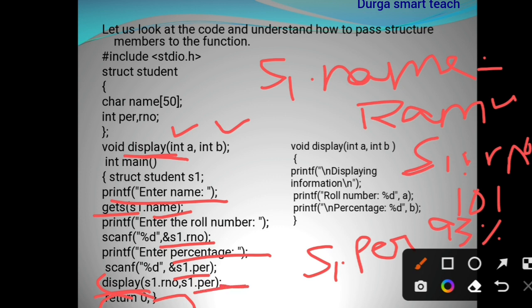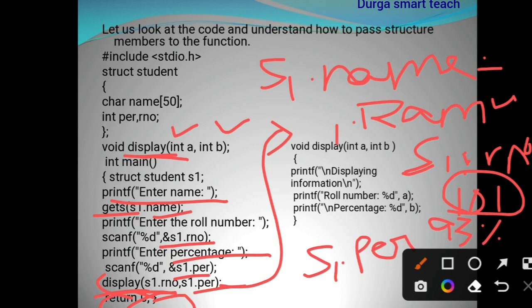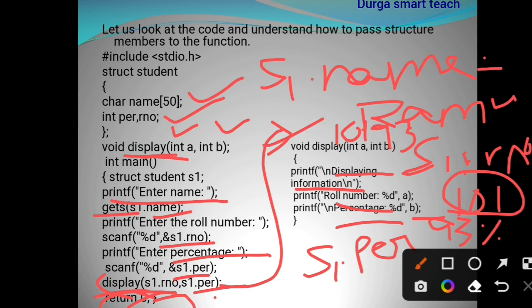Whenever you call the display function, the control passes to void display. The value s1.rnumber is 101, so 101 is stored in a. s1.percentage is 93, so 93 is stored in b. Inside the function, we print the information: role number is a, which is 101, and percentage is b, which is 93. So here the structure members are passed as arguments to the function.